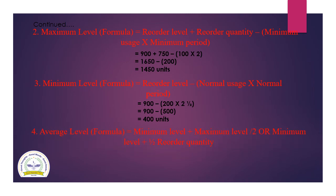Moving towards the last level — average level. The formula is: minimum level plus maximum level divided by 2. Alternatively: minimum level plus half of re-order quantity. We are taking the first formula: 400 plus 1450 divided by 2, so the answer comes to 925 units.